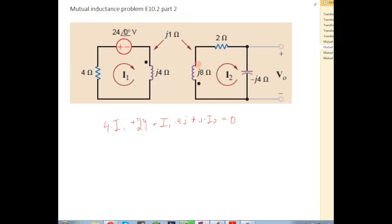But if these two dots were on the same side, like if they were both on the top, then because I1 is going into a dot side and I2 would be going into a not dot side, you'd subtract. So that's the one thing you have to keep in mind, otherwise it's just a little extension into mesh analysis.